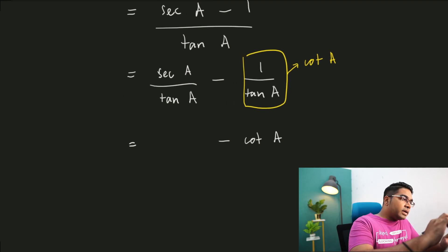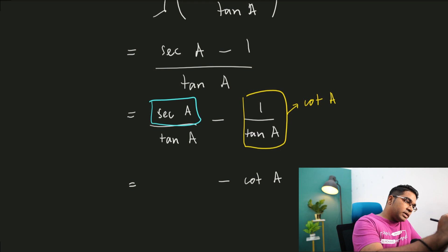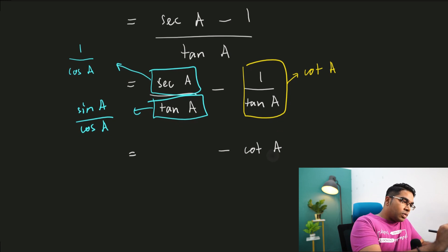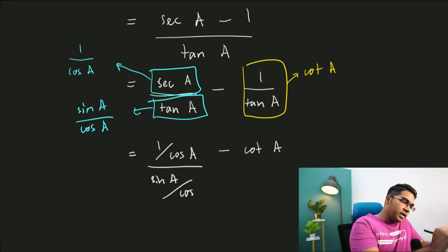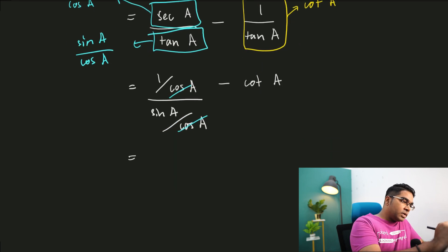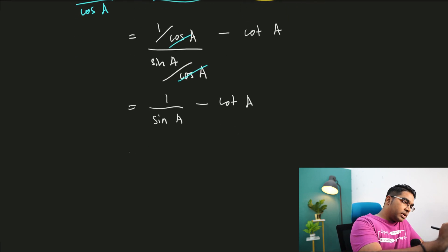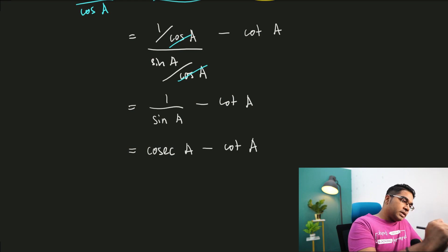Now let's deal with secant a over tangent a. Secant a is 1 over cos a, and tangent a is sin a over cos a. So we get 1 over cos a, divided by sin a over cos a. The cosine terms cancel, leaving 1 over sin a. And 1 over sin a equals cosecant a. So we have cosecant a minus cotangent a, which is the right hand side — therefore we have proven it.